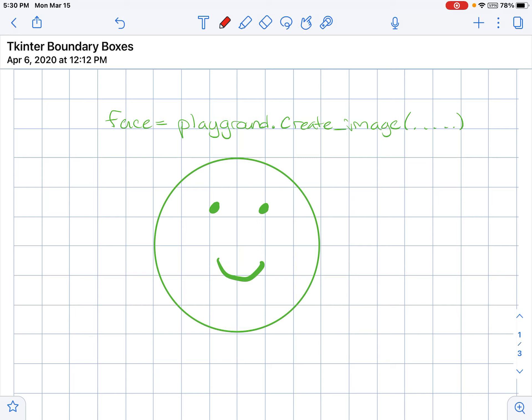In this video we're going to talk about boundary boxes. Let's say I created an image that's a face. Every image that's on your Tkinter canvas has a boundary around it, and it's not perfect.